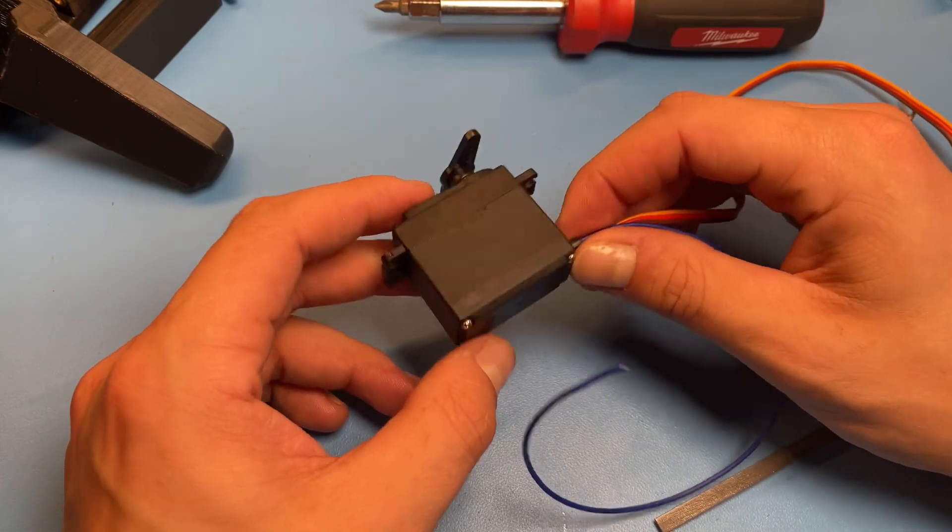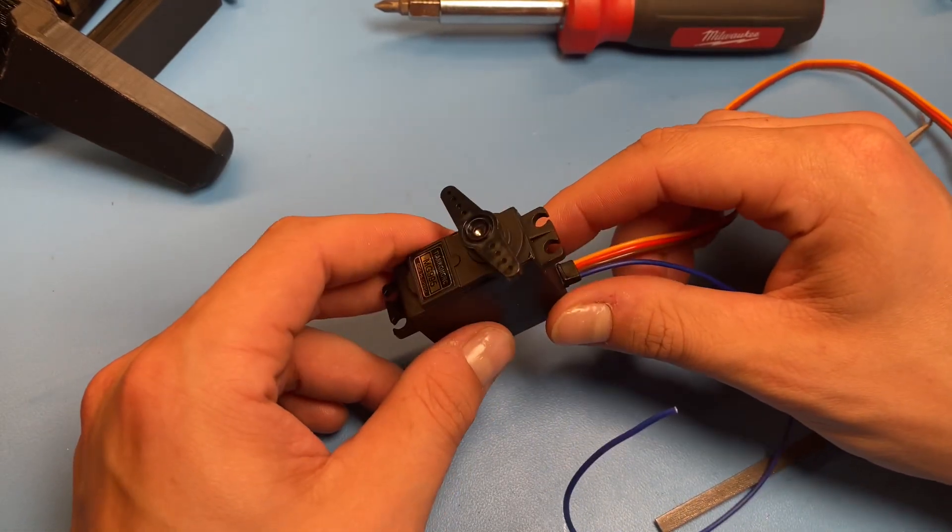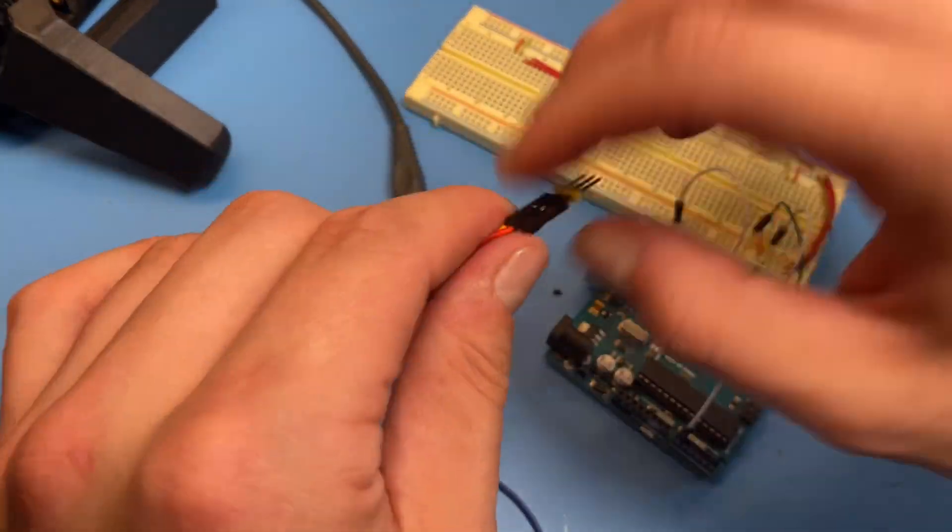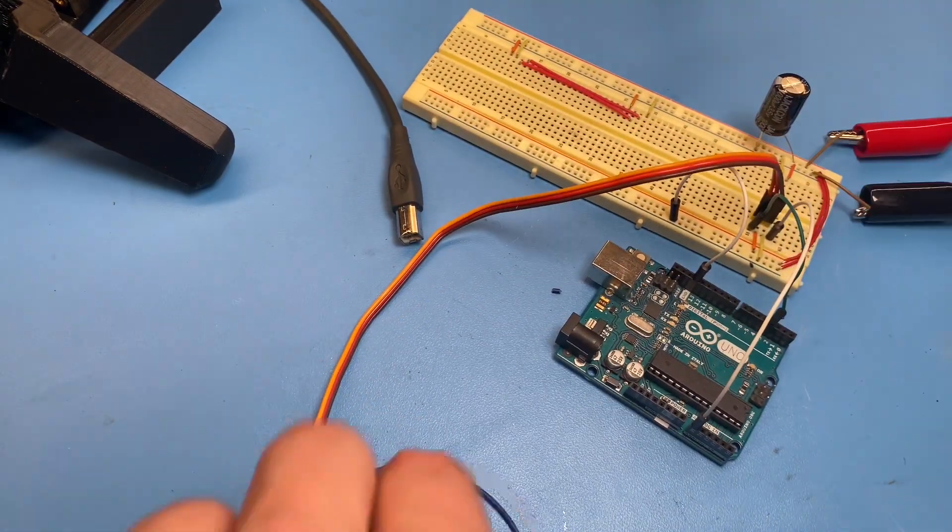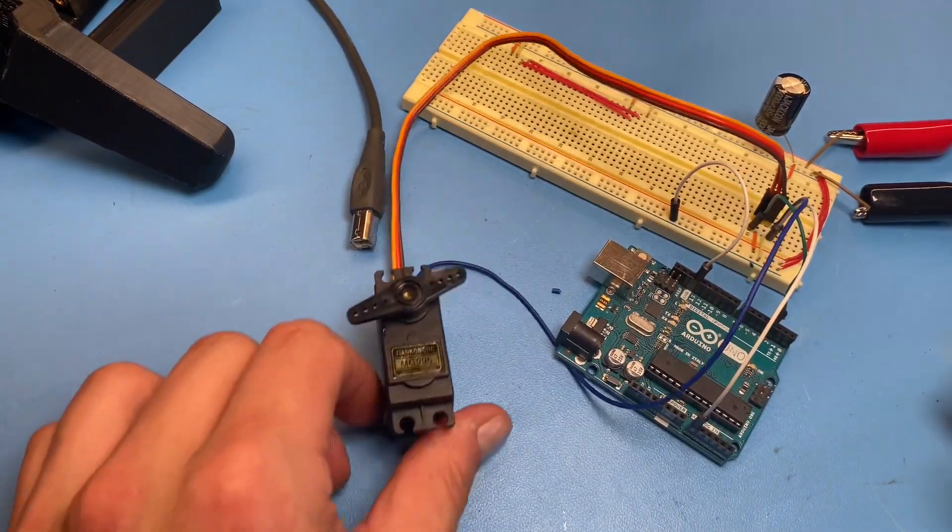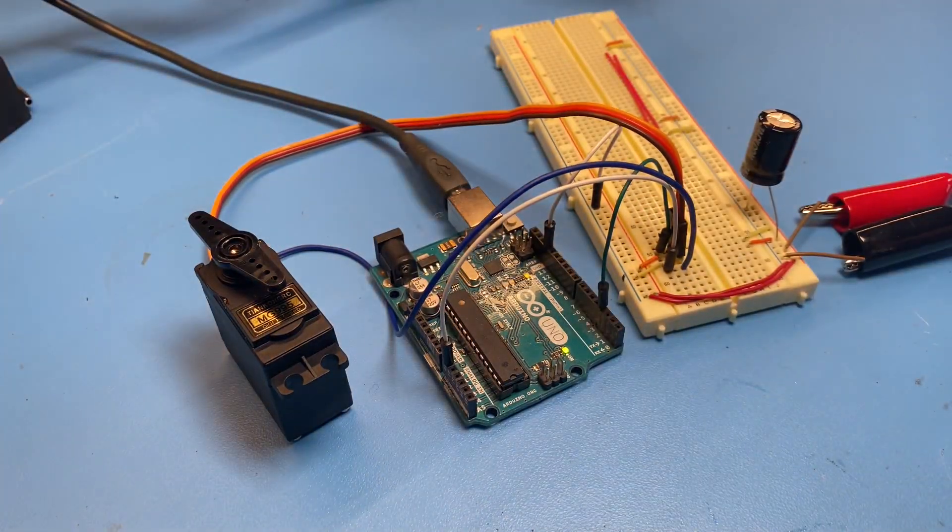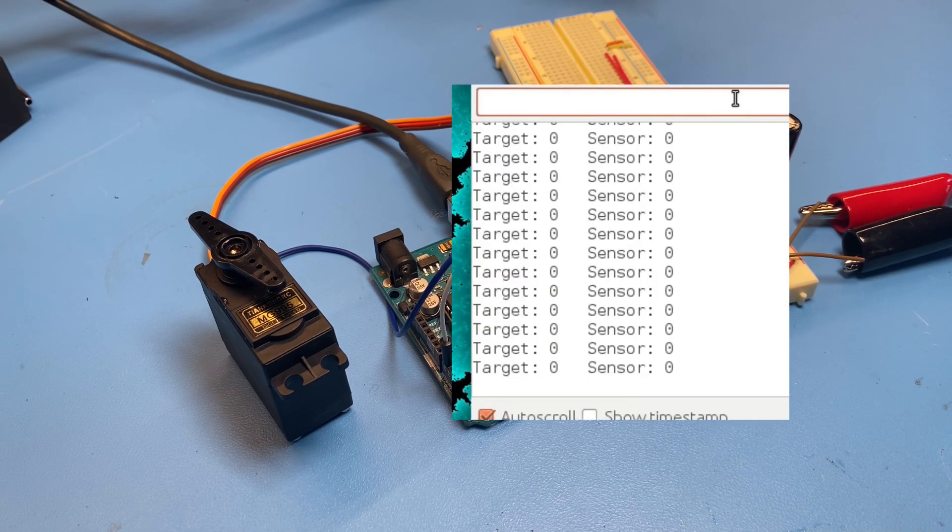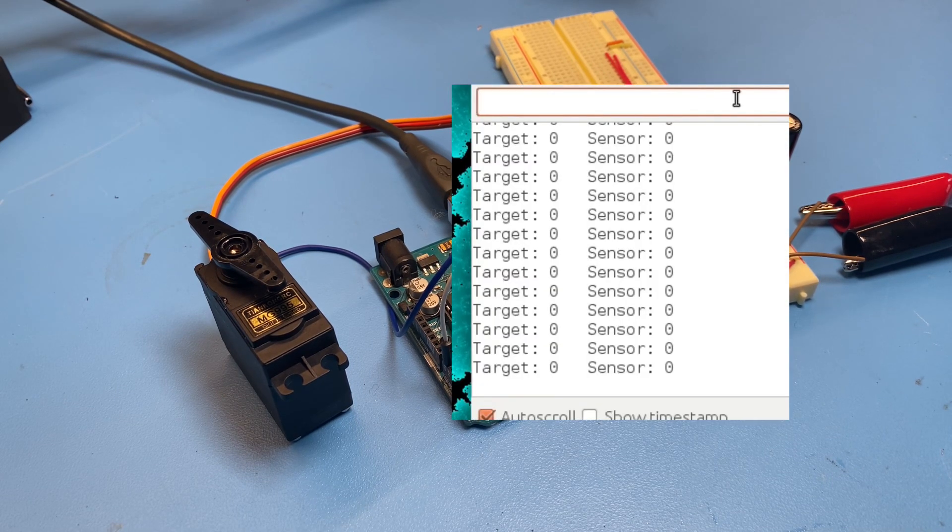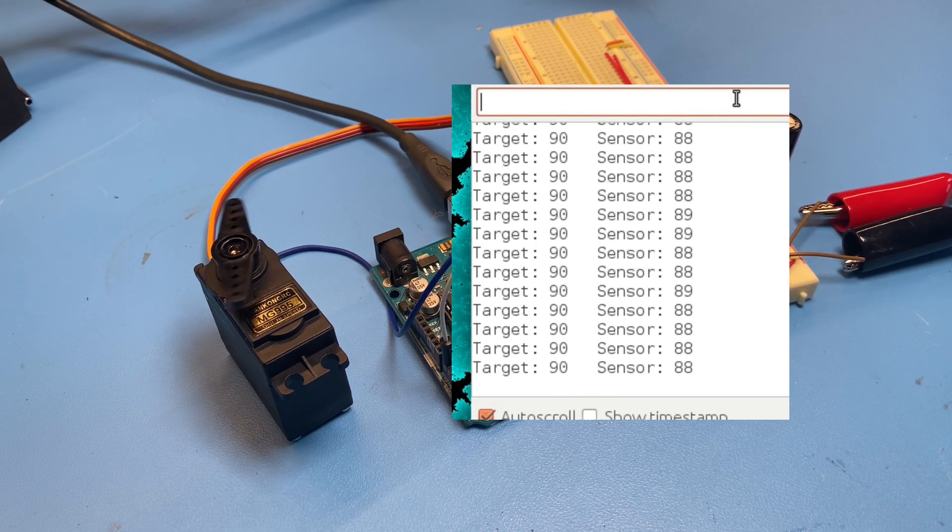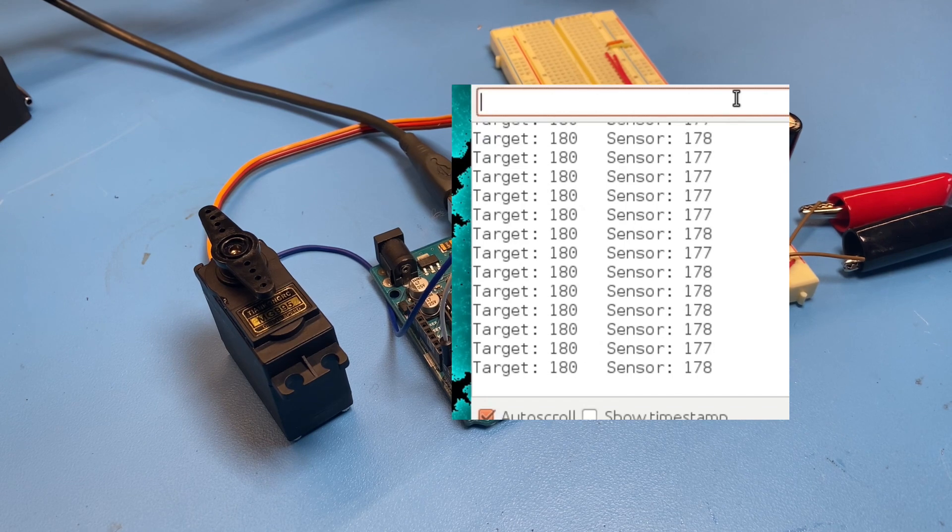All right, now with it back assembled, I think it's time to plug it back into the Arduino and make sure we didn't break anything. All right, so we have the servo set back up connected to the Arduino. And over here we have the terminal again. And let's set 90 and see what happens. All right, so it looks like it's successfully reading the angle there. We haven't screwed anything up. Seems like it's working all right.